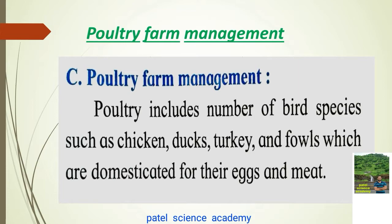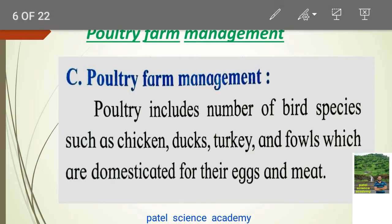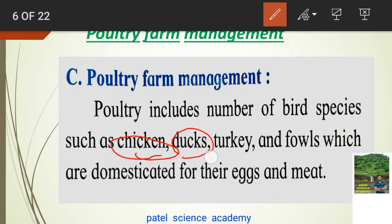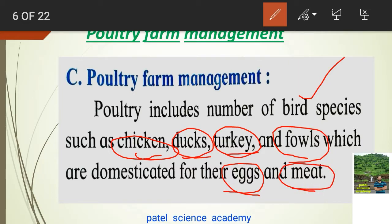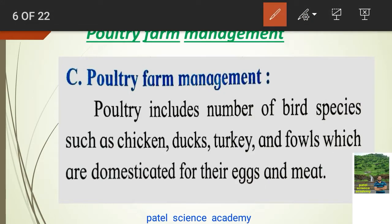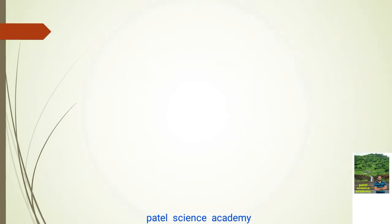Poultry farm management is a branch of animal husbandry in which bird species like chickens, ducks, turkey, and fowls are domesticated for getting their eggs, meat, and feathers. This is the core definition of poultry farm management.